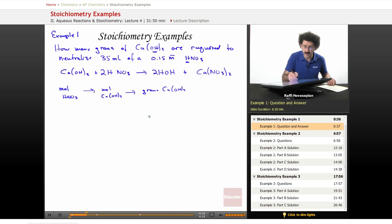So let's start by finding the number of moles of HNO3. So we have 0.035 liters, because it's 35 milliliters, times 0.15 mole per liter.